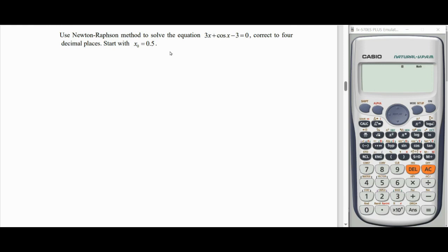So first of all, we have to get to the function with the given non-linear equation 3x plus cos x minus 3 equals to 0. So once it is equal to 0, we can make it to a function. So your function will be 3x plus cos x minus 3.